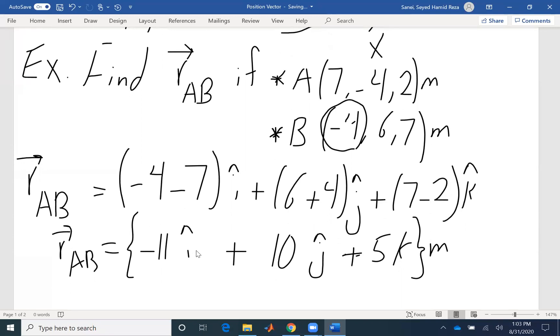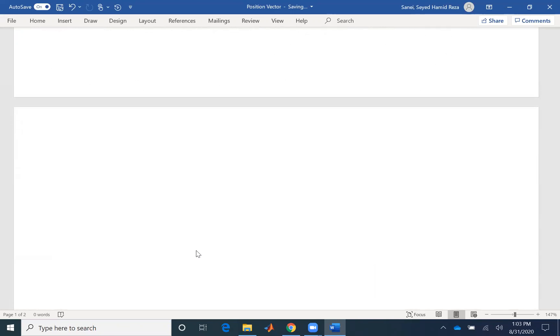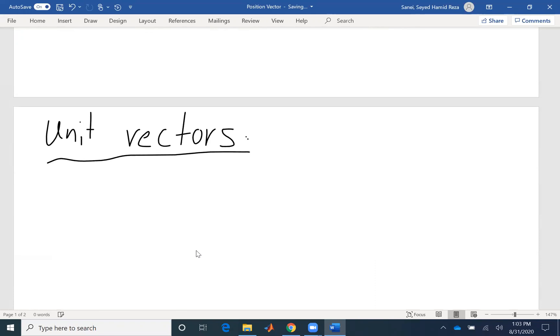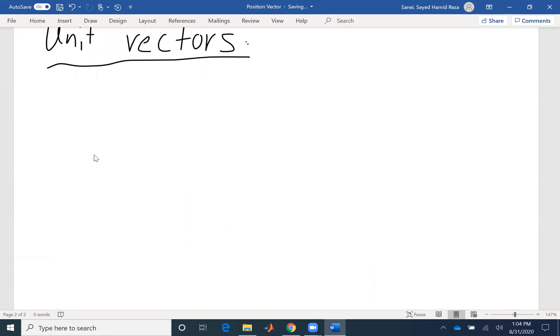So the next concept that we are going to talk about is unit vector. Unit vector, as the name suggests, gives us information about the direction of our vector and has a magnitude of 1. A unit vector has a magnitude of 1 and indicates the direction.